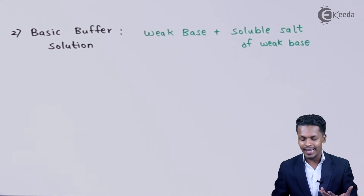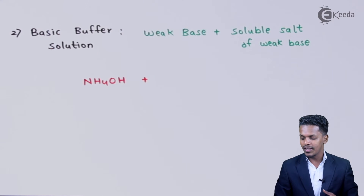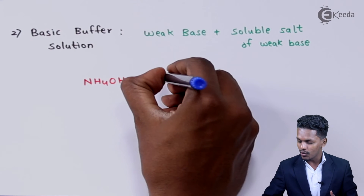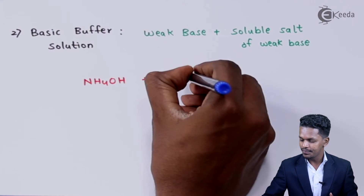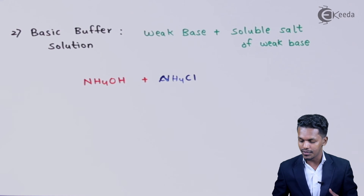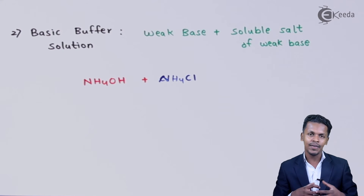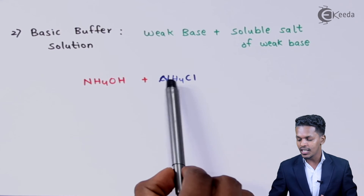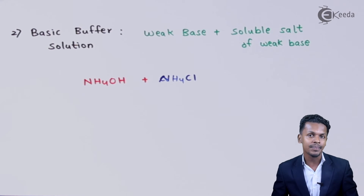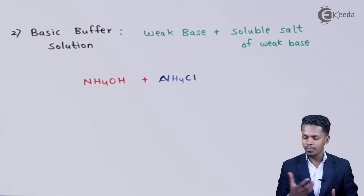So suppose if we take a weak base like NH4OH — that is a weak base — and a soluble salt of that weak base, NH4Cl. These two chemicals taken in equal proportion form a basic buffer solution. NH4OH is a weak base and therefore won't dissociate completely. NH4Cl is a salt consisting of NH4⁺, which is why it is known as the soluble salt of a weak base. Combined in equal proportion, they form a basic buffer solution.